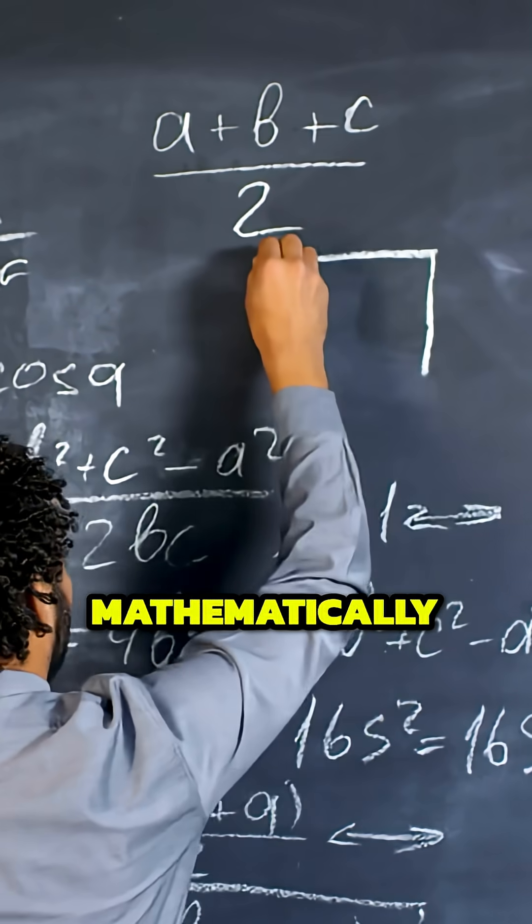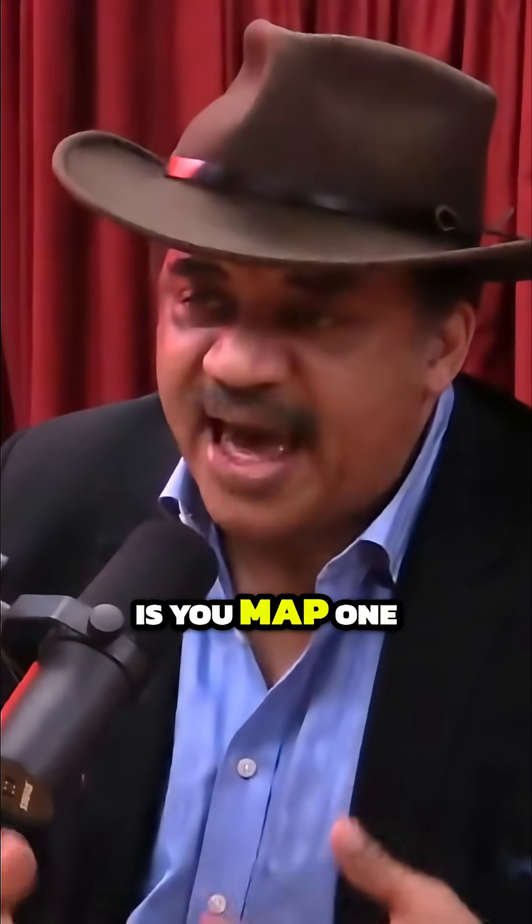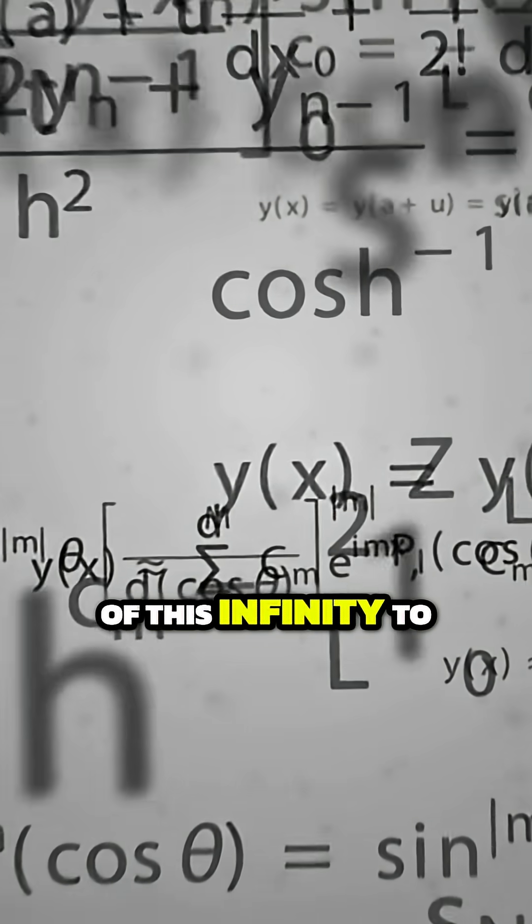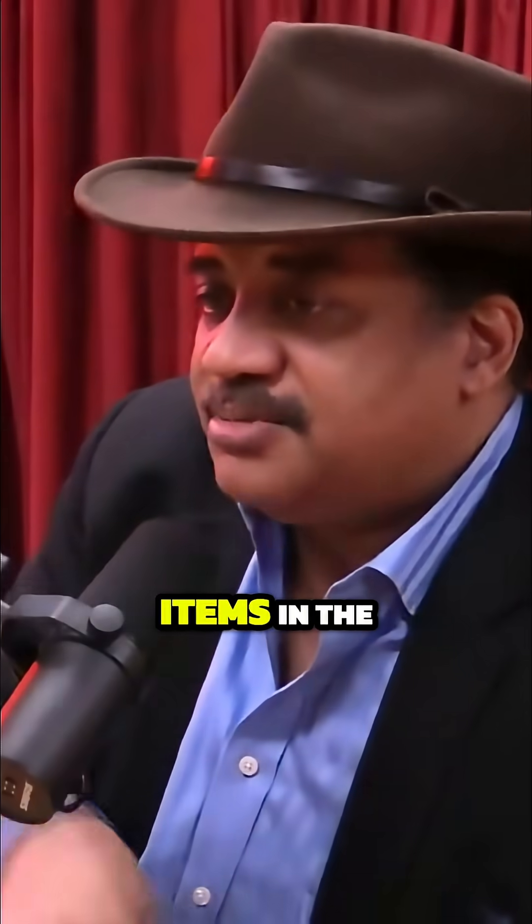So the way they do that mathematically, the way to demonstrate that mathematically, is you map one item in the set of this infinity to corresponding items in the set of the other infinity. And so you do this.